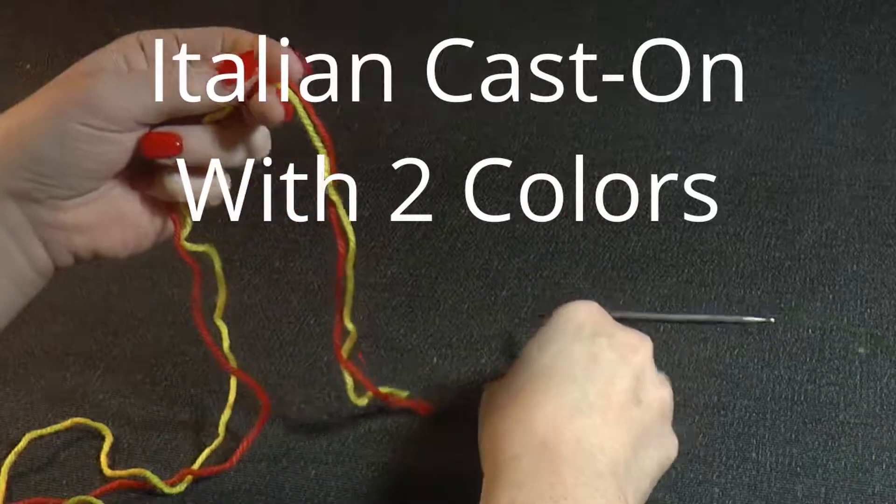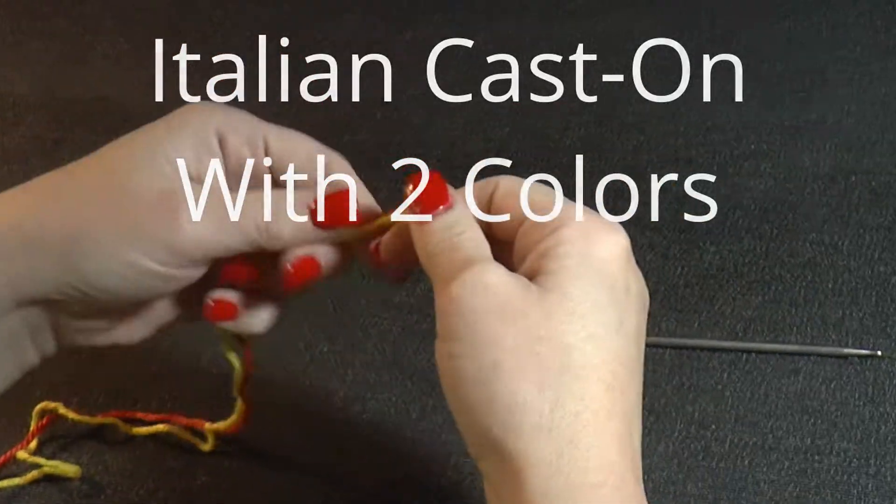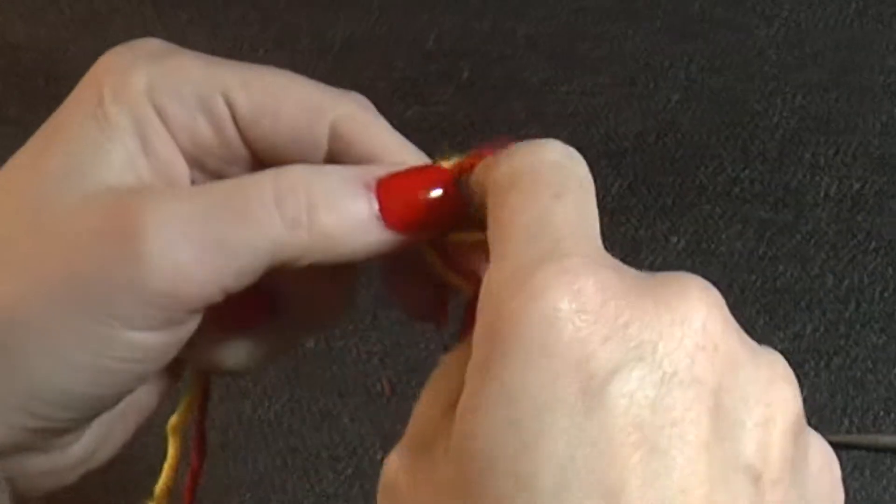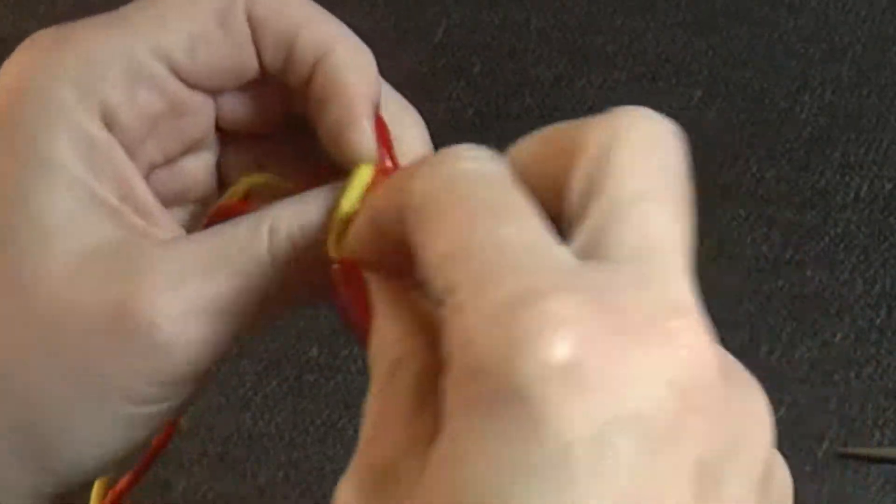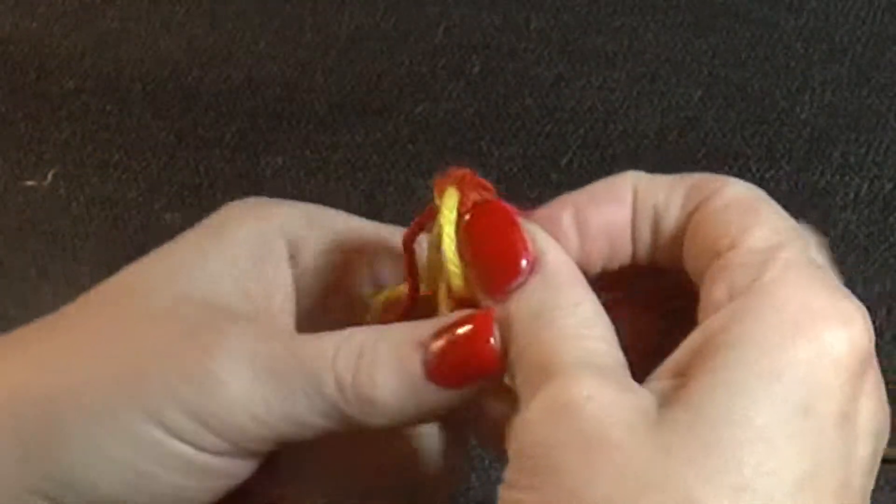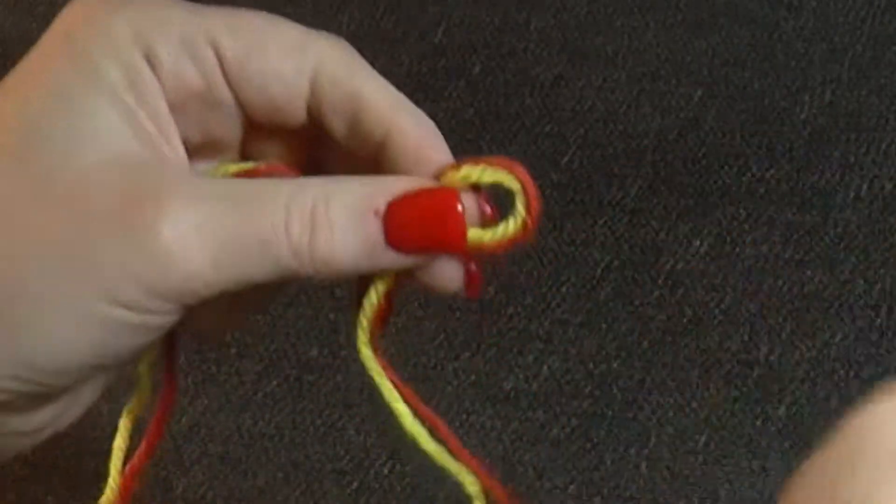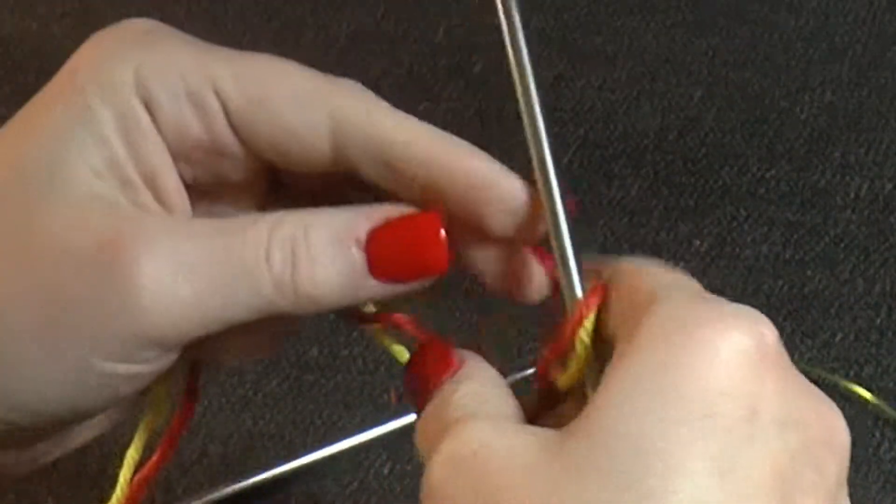The Italian cast on with two colors. First thing, make a slipknot with both colors and then put it on your needle.